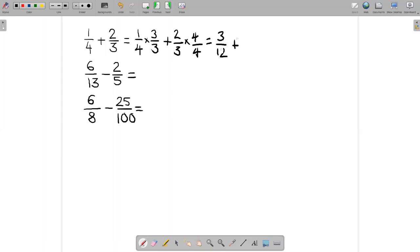Same thing for two thirds times four over four. Now we've got the fractions expressed using a common denominator, and that allows us to simply add the numerators now. So 11 twelfths is the answer.